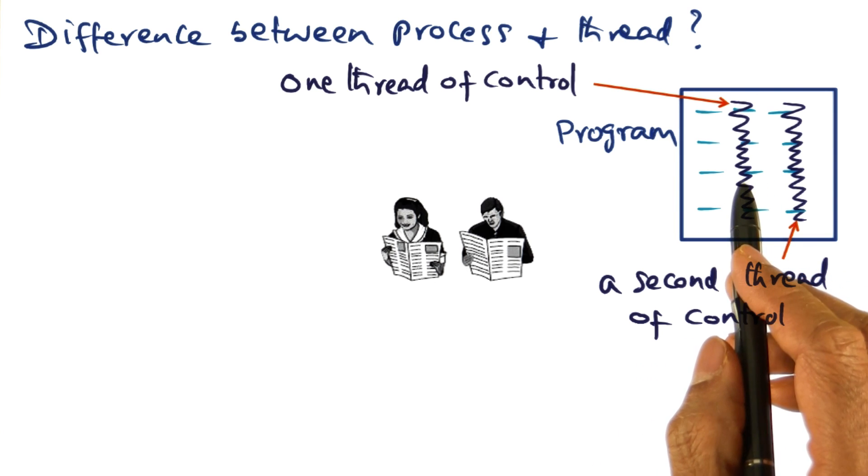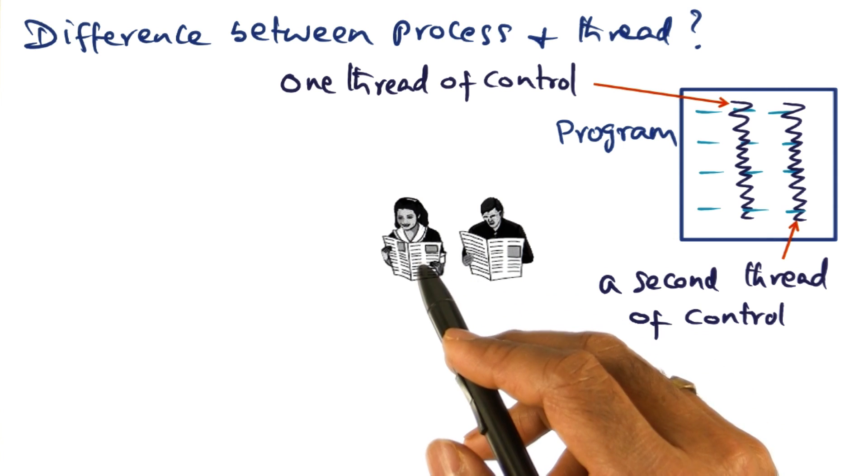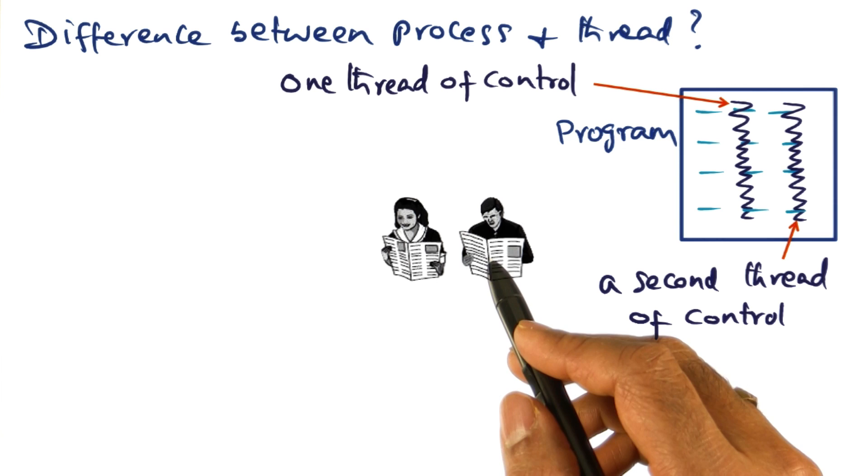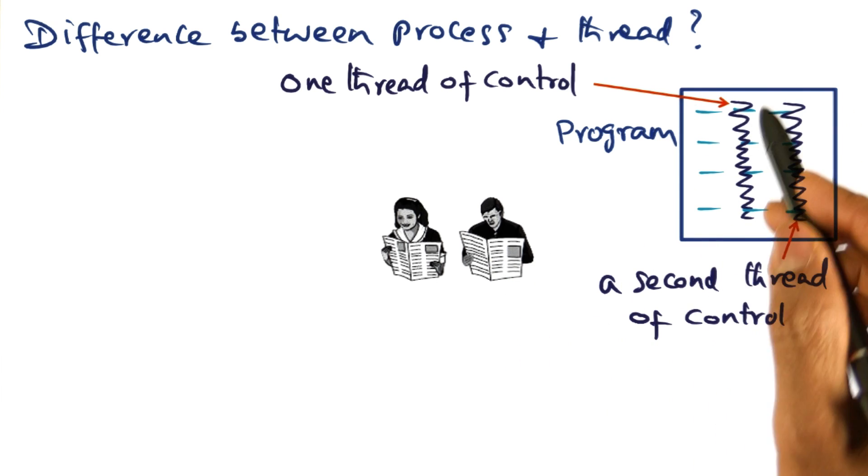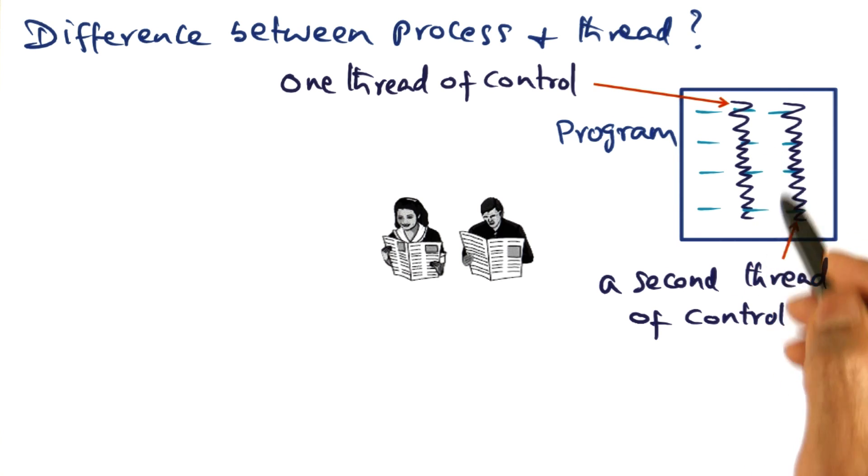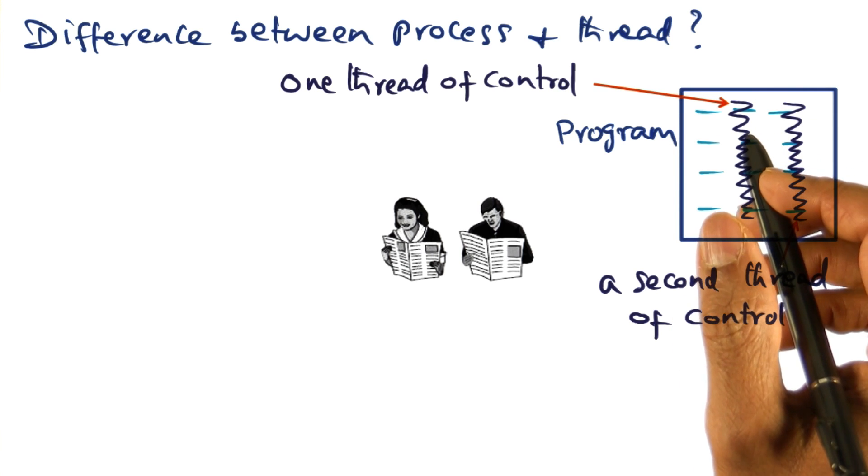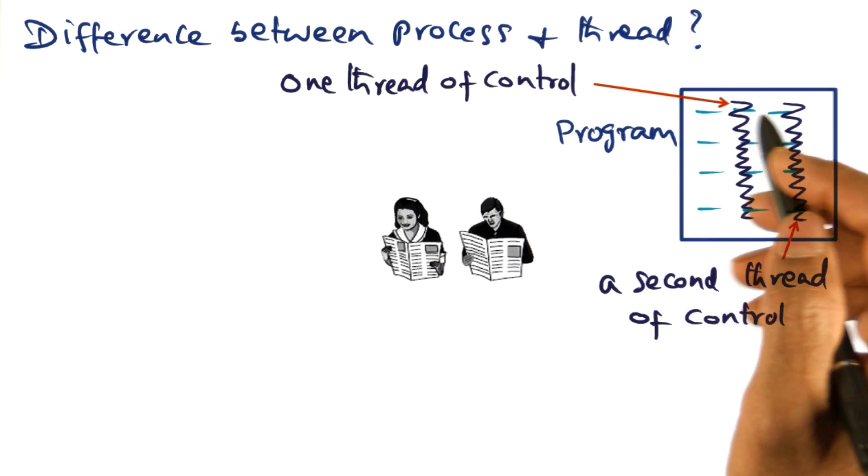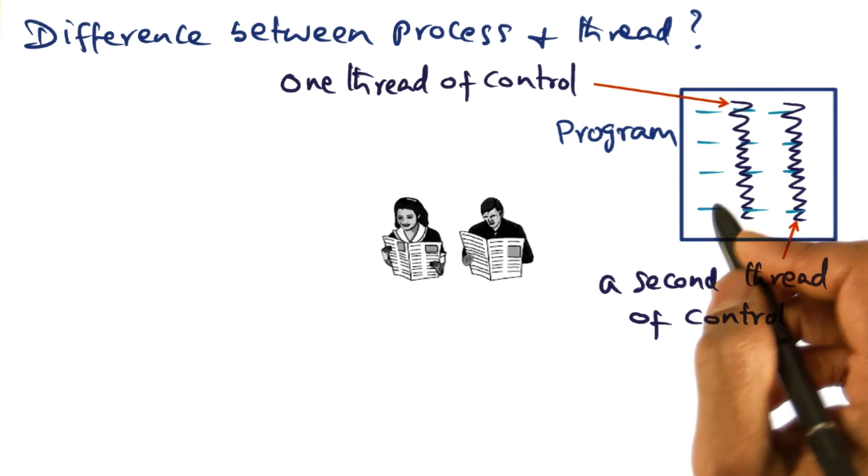Now, could there be a conflict between these different threads of control? Sure. Both my wife and I may want to read the same section of the newspaper. That's a conflict. Similarly, the threads that are executing within the same program may want to read or update the same data structures. These are the issues that the operating system has to deal with, and this is what I meant when I said that the operating system is the arbiter for competing requests for resources.